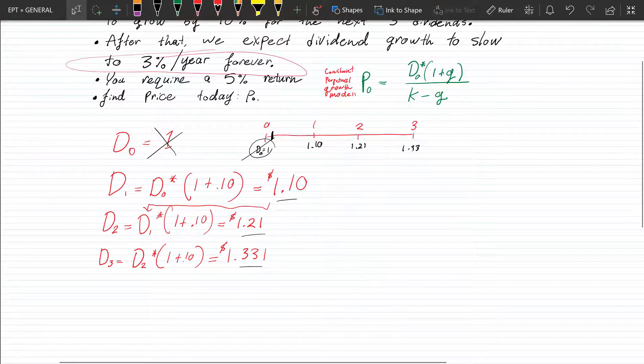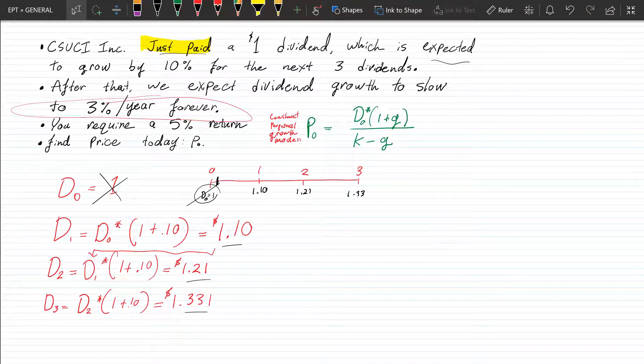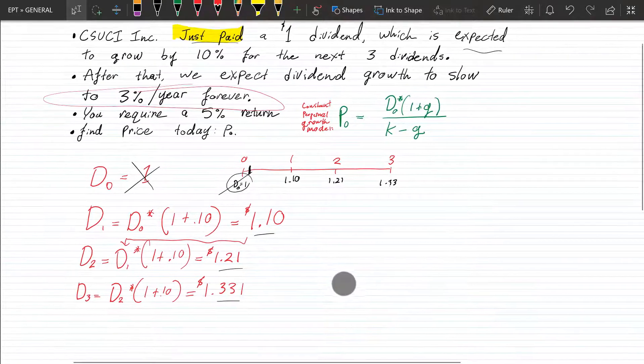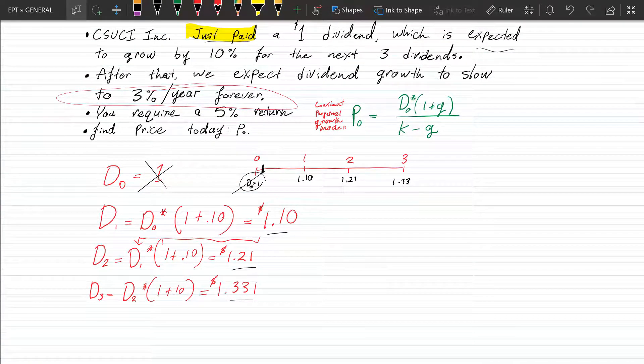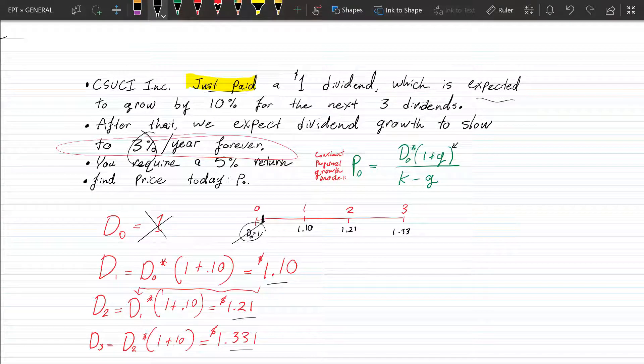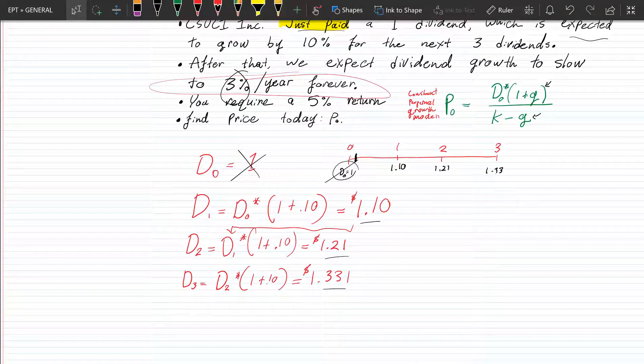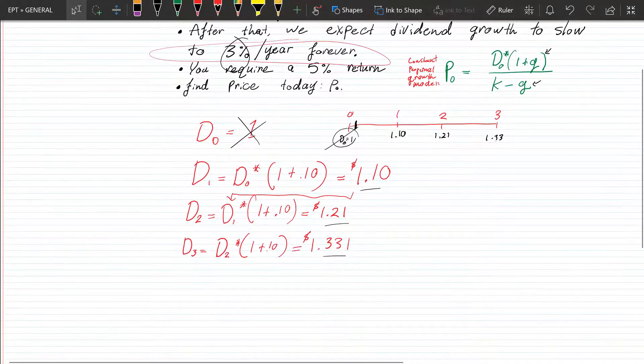We're going to use the constant perpetual growth model. Okay, so the constant perpetual growth model, what it does is we're going to start using this new rate, which is the 3%, and we're going to plug it in for G. And what that's going to allow us to do is essentially, just like we calculated perpetuities, we're going to calculate these.